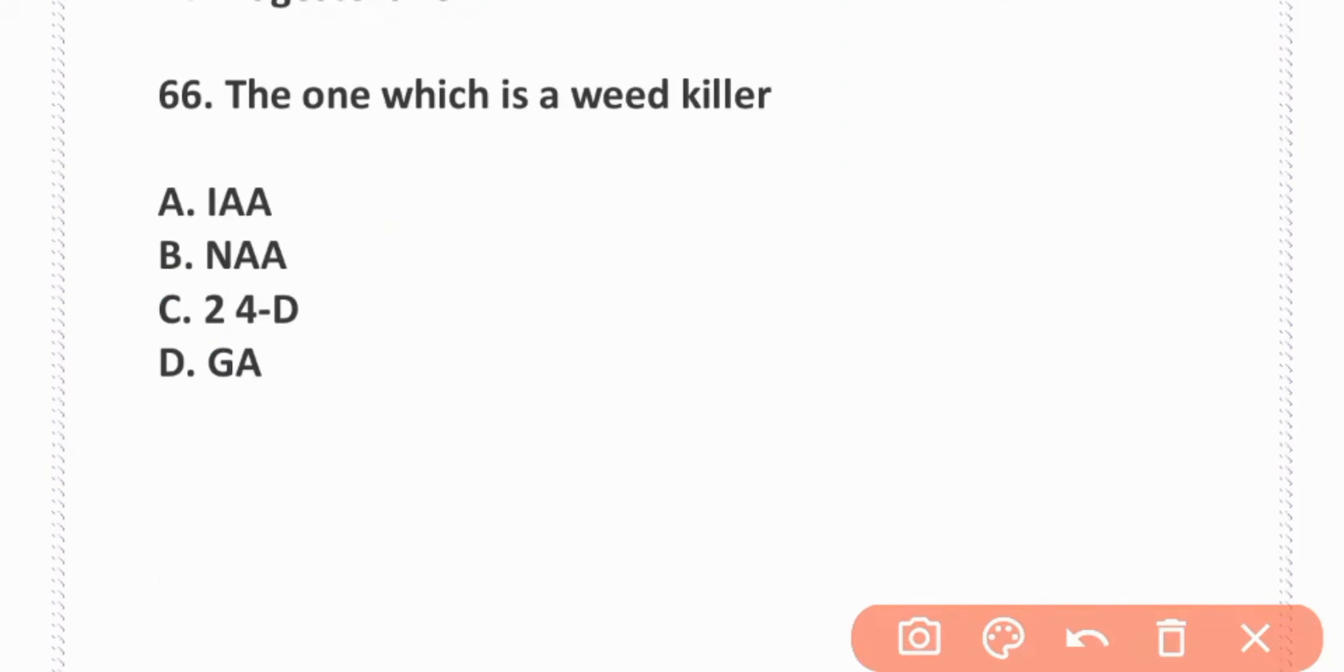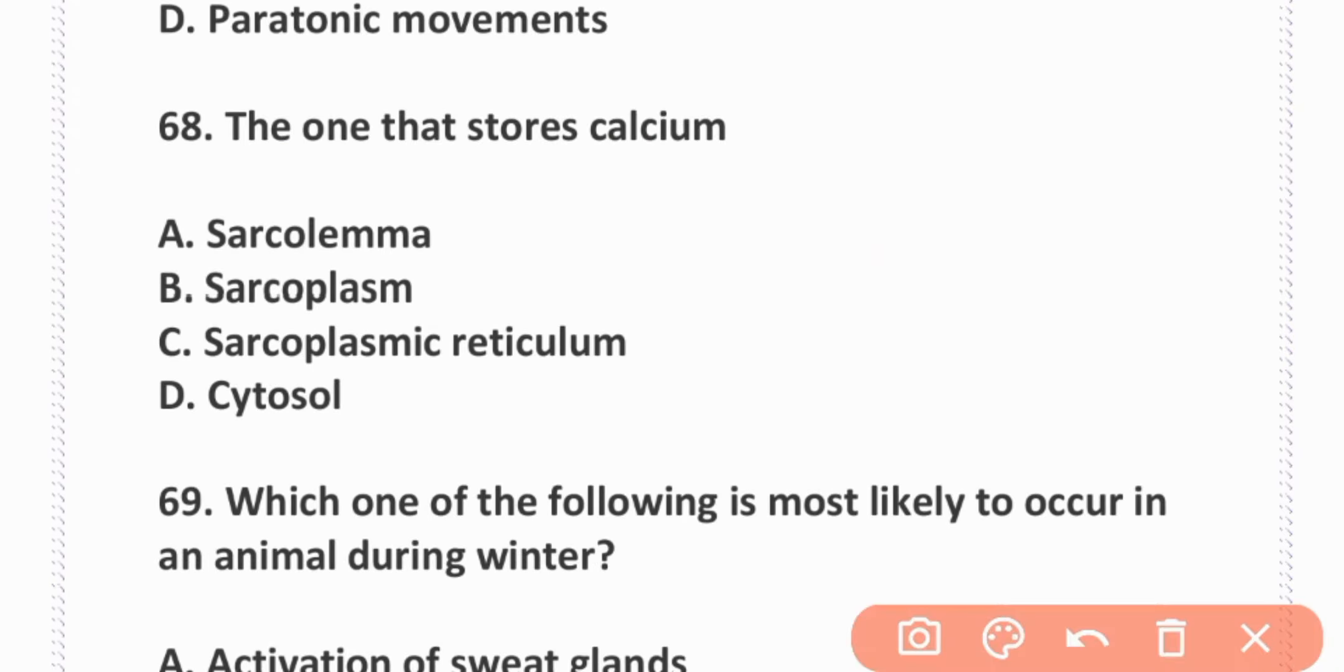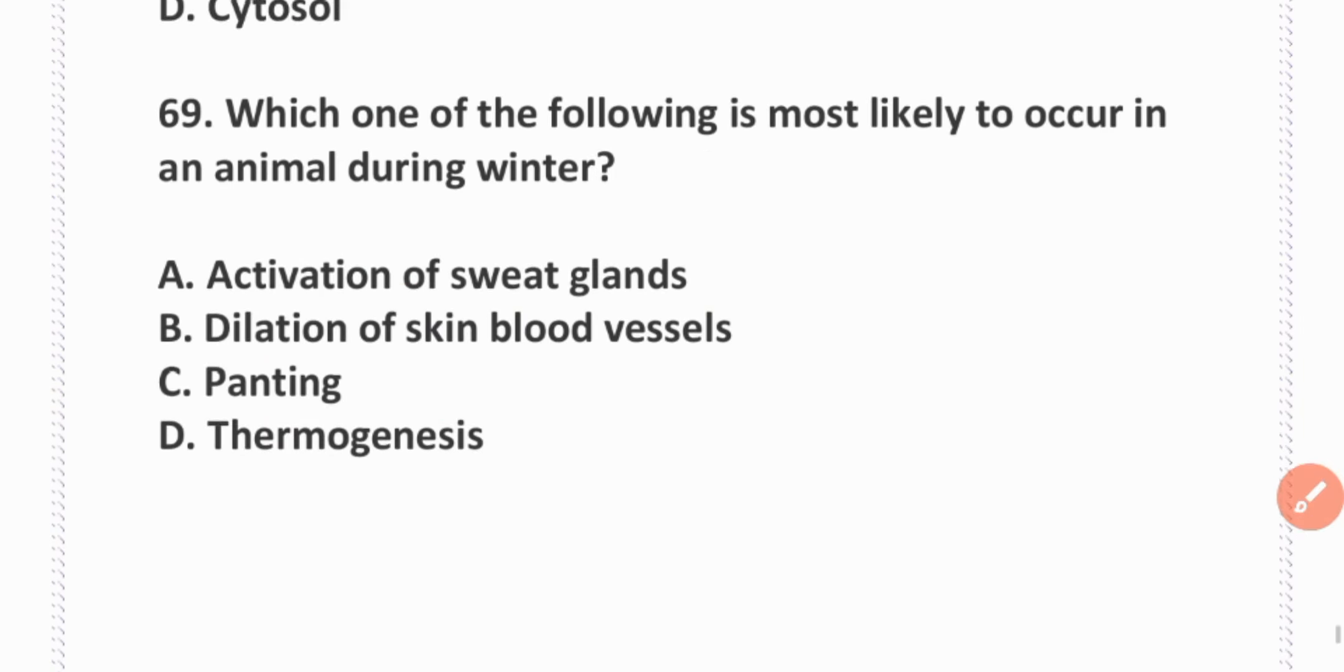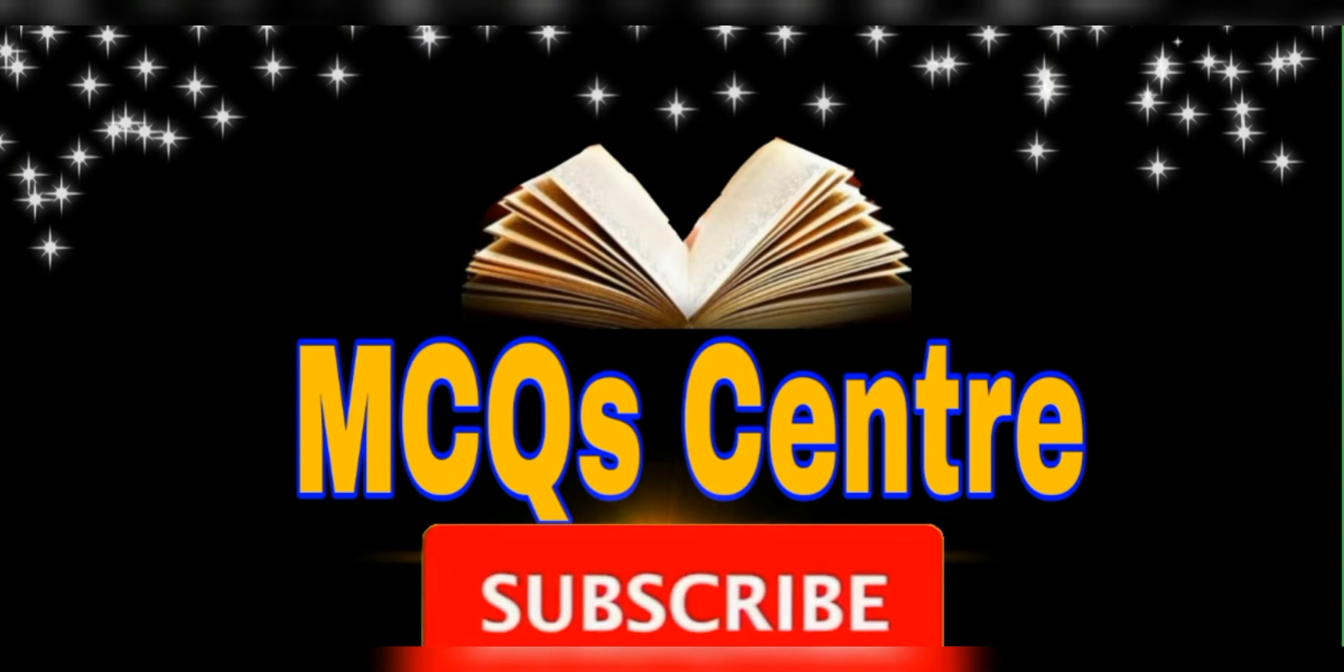The one which is a weed killer is 2,4-D. The structure that stores calcium is called sarcoplasmic reticulum. Which of the following is most likely to occur in an animal during winter? Thermogenesis.